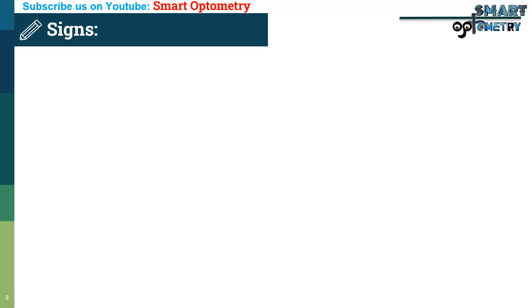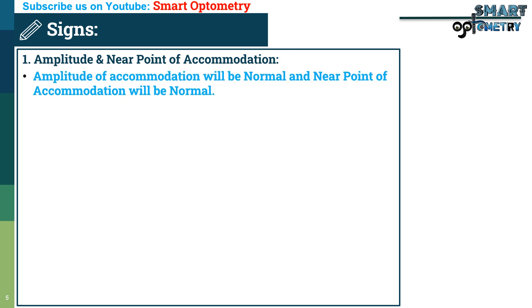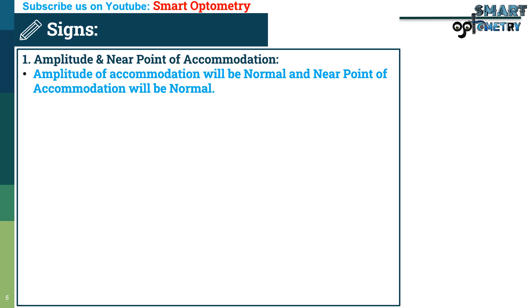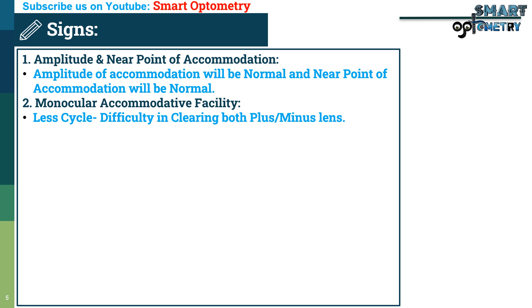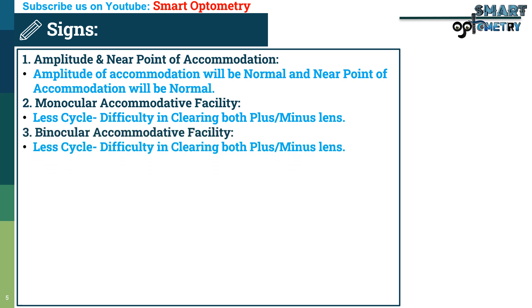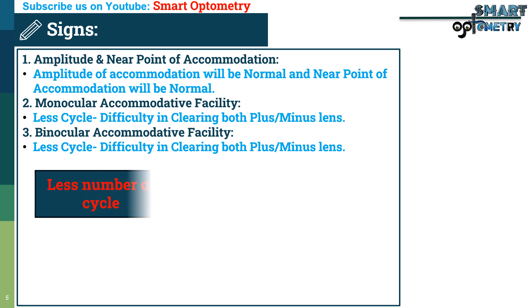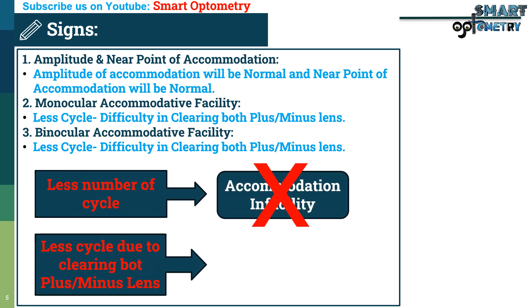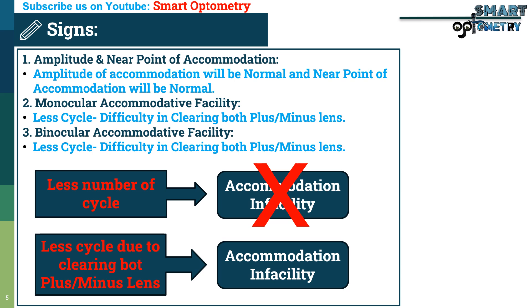Signs of accommodative infacility: Amplitude of accommodation and near point of accommodation will both be normal. Monocular and binocular accommodative facility will show fewer cycles, with difficulty clearing both plus and minus lenses. The diagnosis is not finalized by a low number of cycles alone — it must be due to difficulty clearing both plus and minus lenses. If only plus or only minus is difficult, that points to a different condition. In accommodative infacility, the cycle count is low specifically because of difficulty with both plus and minus lenses.